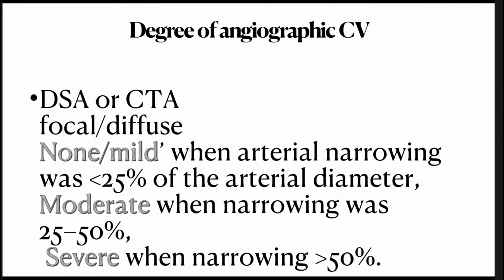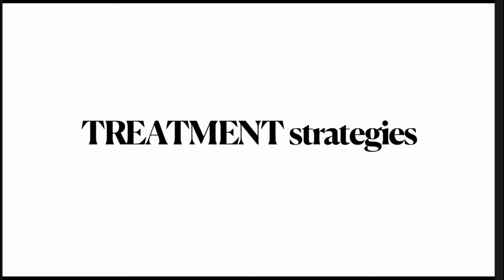For peripheral branches, angiographic diagnosis of vasospasm can be made with DSA or CT angiography. Vasospasm can be divided into focal or diffuse, and angiographic grading is: mild when less than 25% narrowing, moderate when between 25% and 50%, and severe when narrowing exceeds 50%.